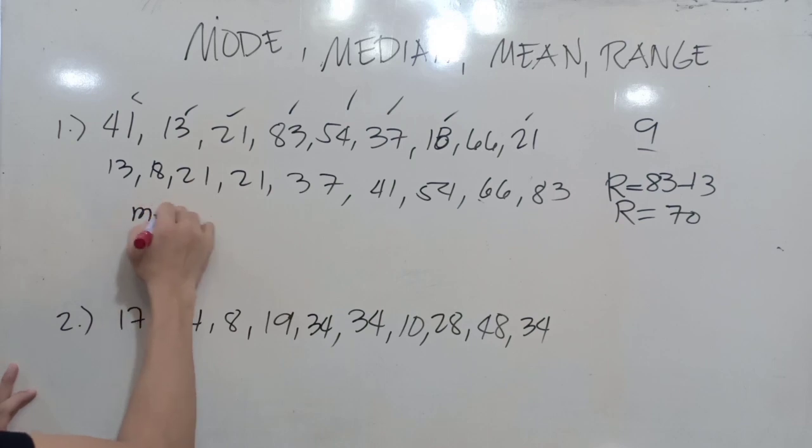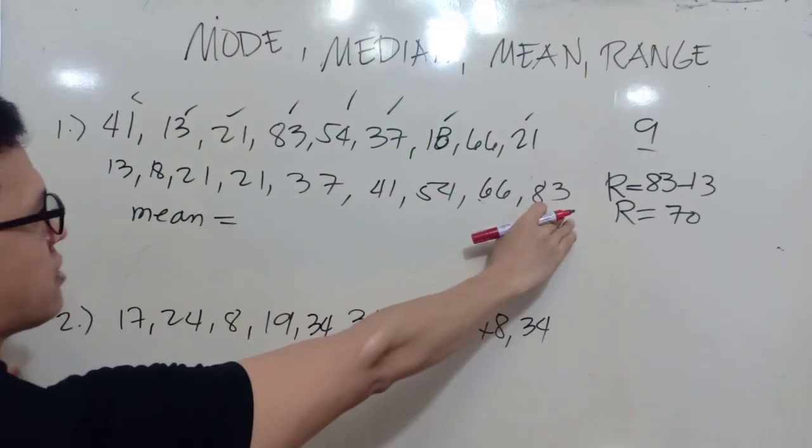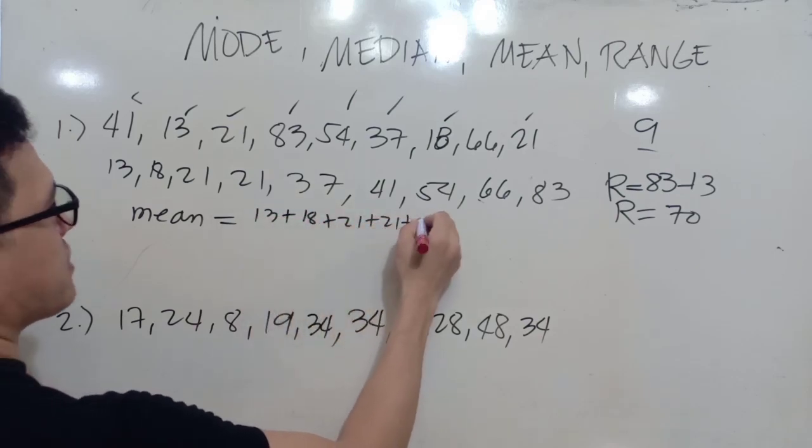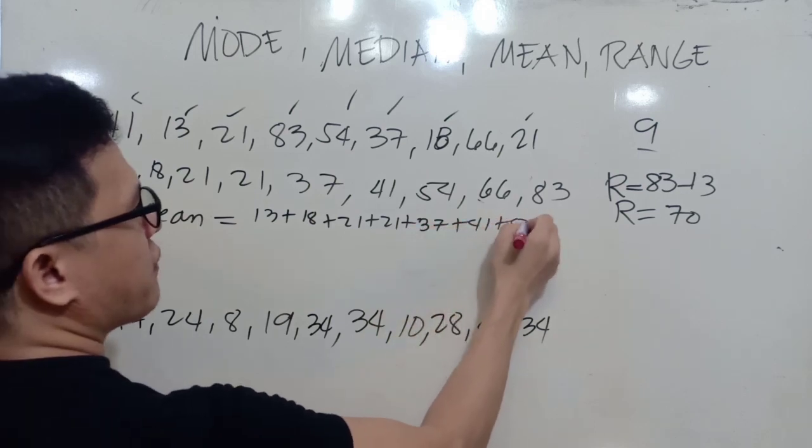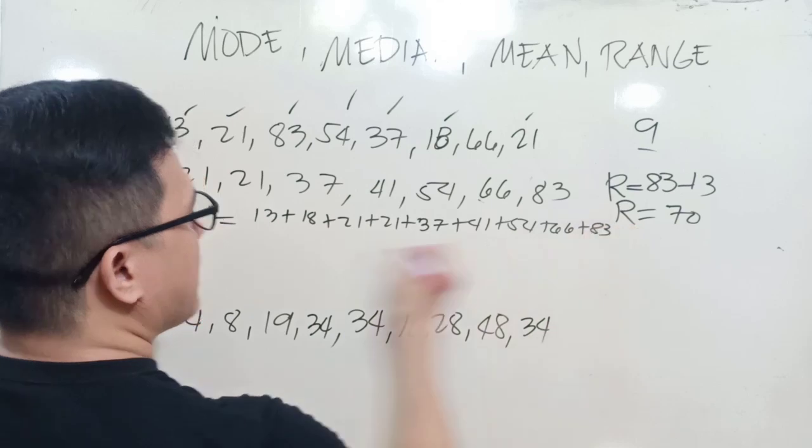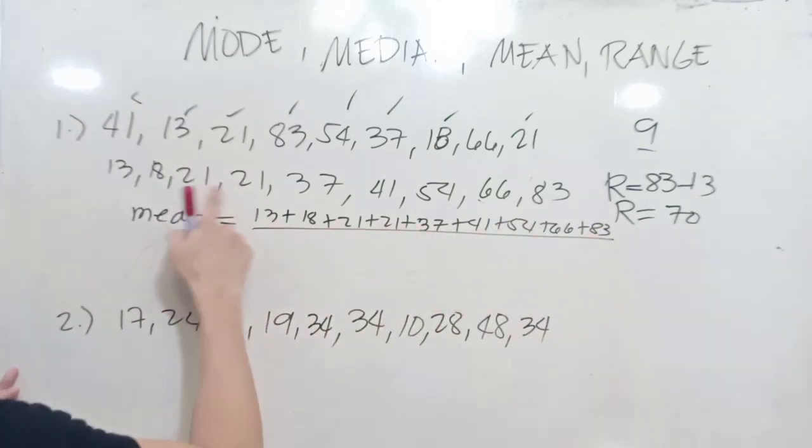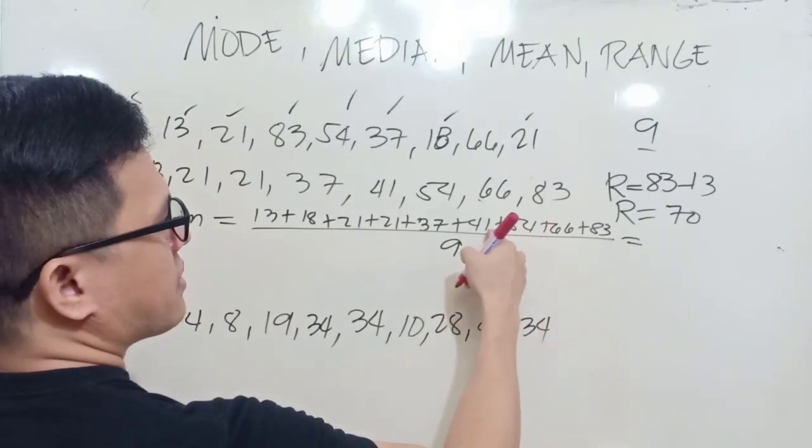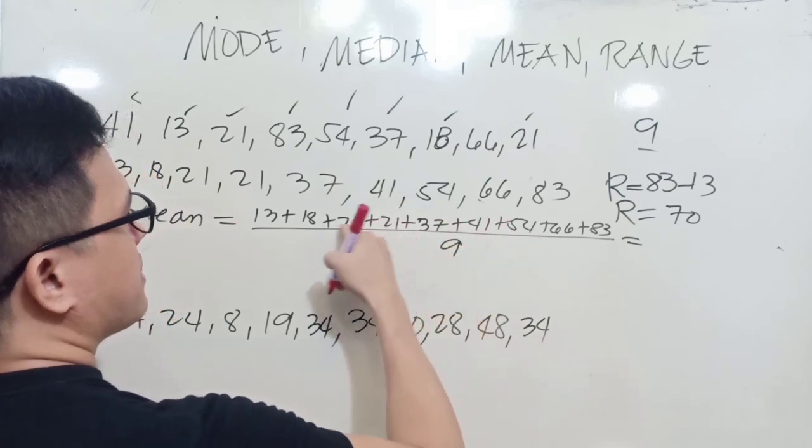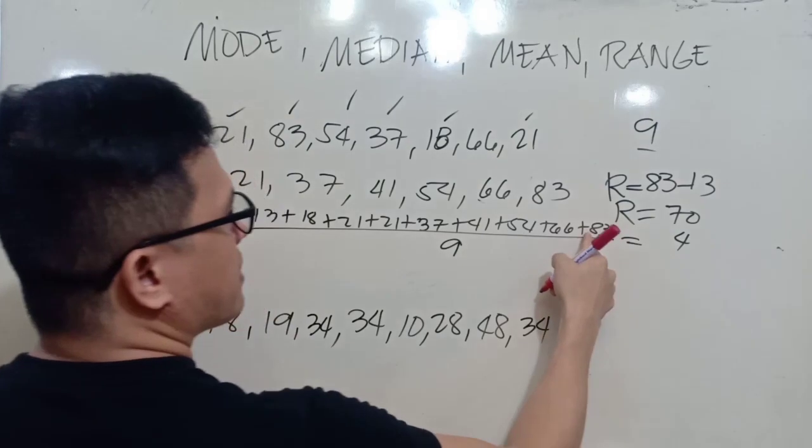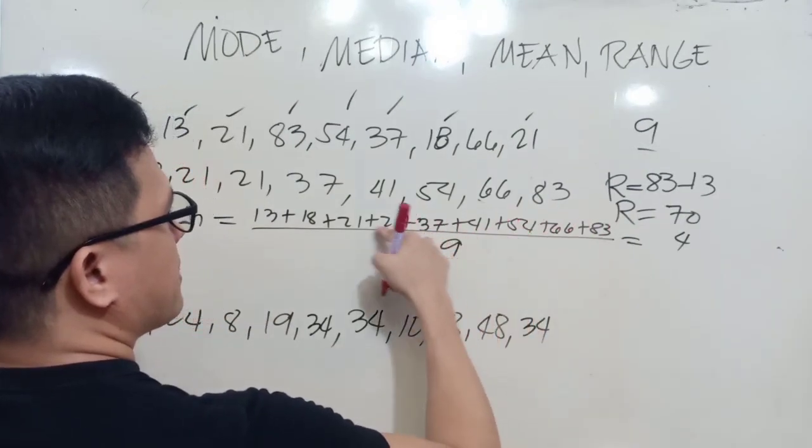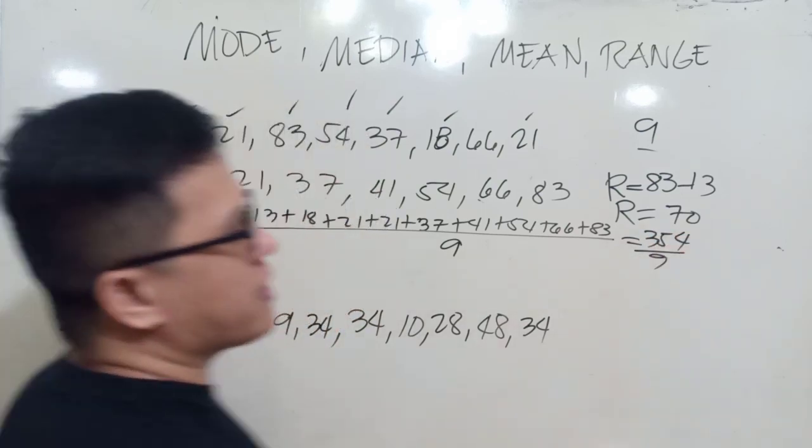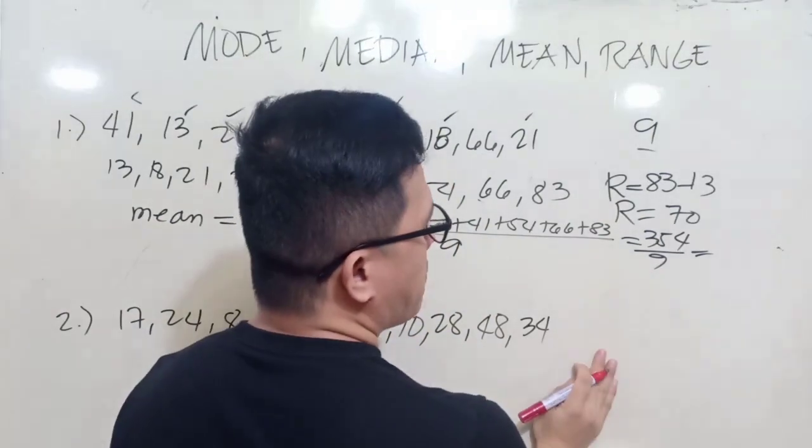Let's have this one first for the mean. We'll just have to get all the total of this one. So we have 13 plus 18 plus 21 plus 21 plus 37 plus 41 plus 54 plus 66 plus 83, and then divided by the total, which is 1, 2, 3, 4, 5, 6, 7, 8, 9. So that's 9.